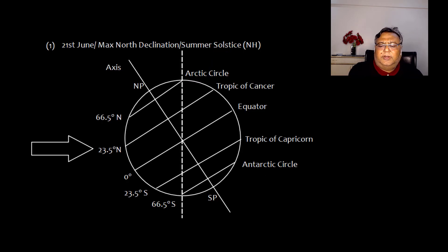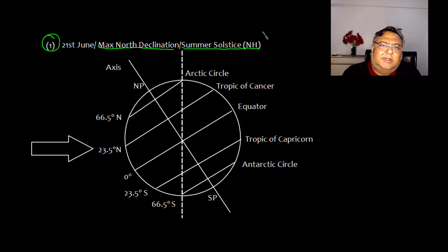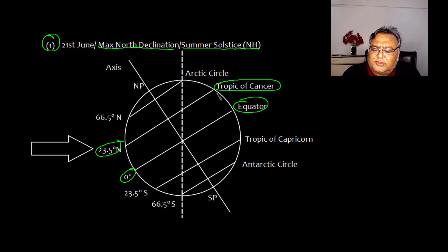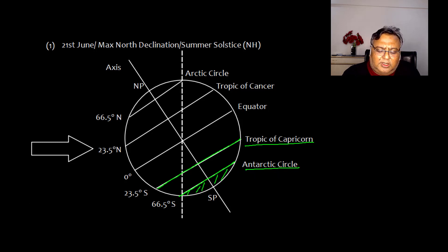To explain further: on 21st June — position 1 — the declination is maximum north and we call it summer solstice for the northern hemisphere. The equator is at 0°, the Tropic of Cancer is at 23.5° north, and the Arctic Circle is at 66.5° north. Going south: the Tropic of Capricorn is at 23.5° south and the Antarctic Circle is at 66.5° south.